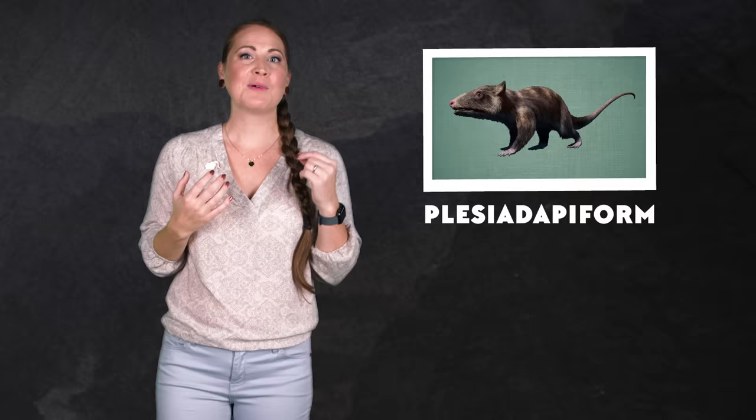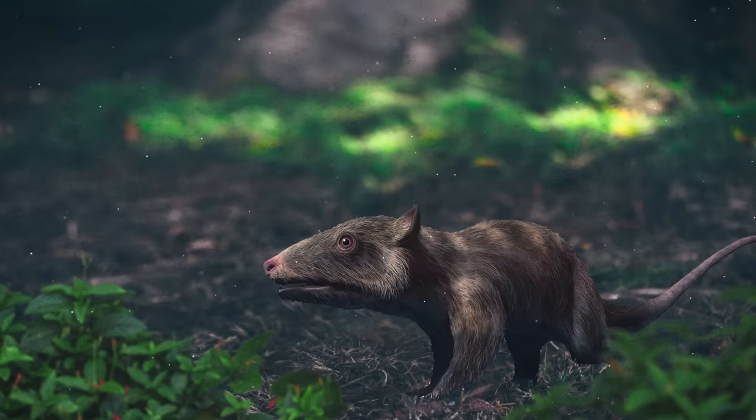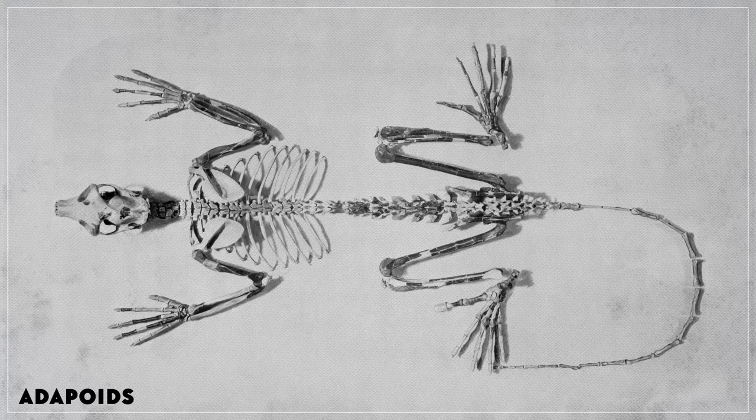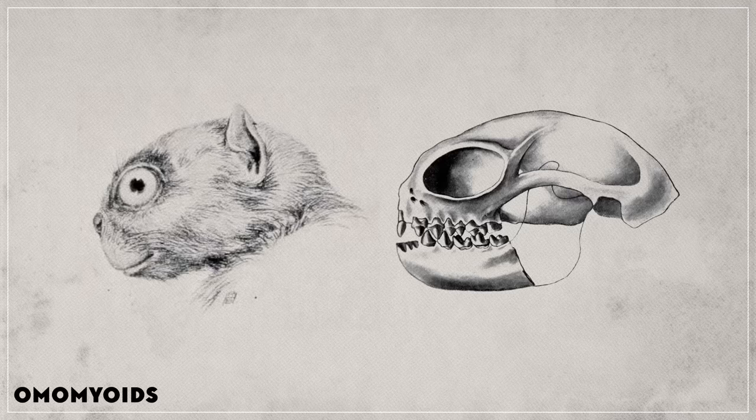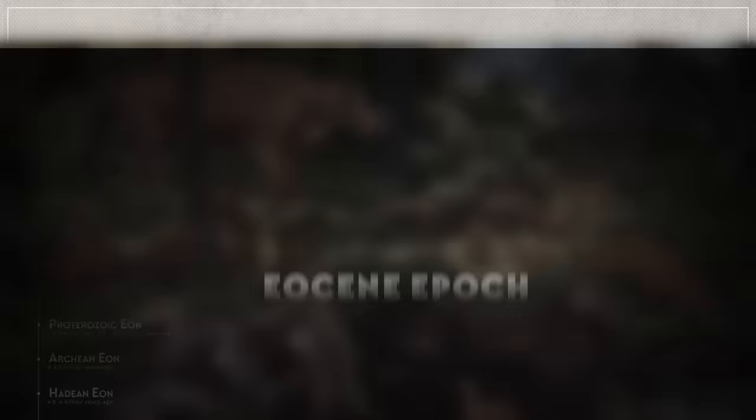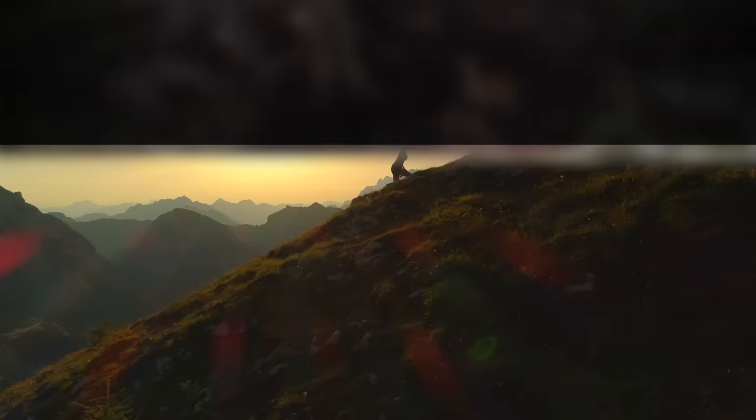Plus, like I said at the very beginning, Purgatorius is a plesiodapaform. And there's still a debate about whether plesiodapaforms are primates, because they don't have enclosed bony orbits, or nails, or even forward-facing eyes. But some researchers support their primate status on the basis of the anatomy of their teeth and ankles. The earliest uncontroversial primates, the ones that have all of the primate features, like the adapoids and the omomyoids, show up about 55.8 million years ago at the start of the Eocene.